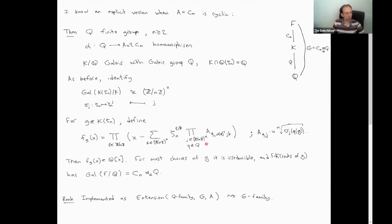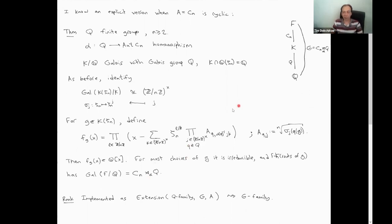It turns out we get exactly the same result as before: we get a polynomial with rational coefficients, and for most choices of G it is going to be irreducible. If you construct a field by joining roots of G to K, then you get an extension which is Galois with Galois group Cn, and it is set up in such a way that it's also Galois over Q, and its Galois group over Q is exactly as we wanted: Cn semi-direct Q. It's not very hard to check by just acting on its roots and seeing what the action does.